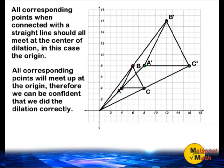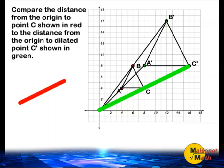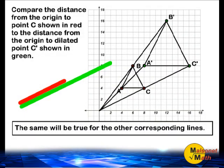Another thing you should notice is that if you compare the distance from the origin to the original points, as compared to the distance from the origin to the dilated points, all of the distances should have doubled because the scale factor was 2. For example, compare the red line — the distance from the origin to point C — as compared to the distance from the origin to the dilated point C shown in green. We can visibly see that the distance to the dilated point C was doubled from the original location of C because the image was dilated by a scale factor of 2. The same will be true for all of the other corresponding lines.